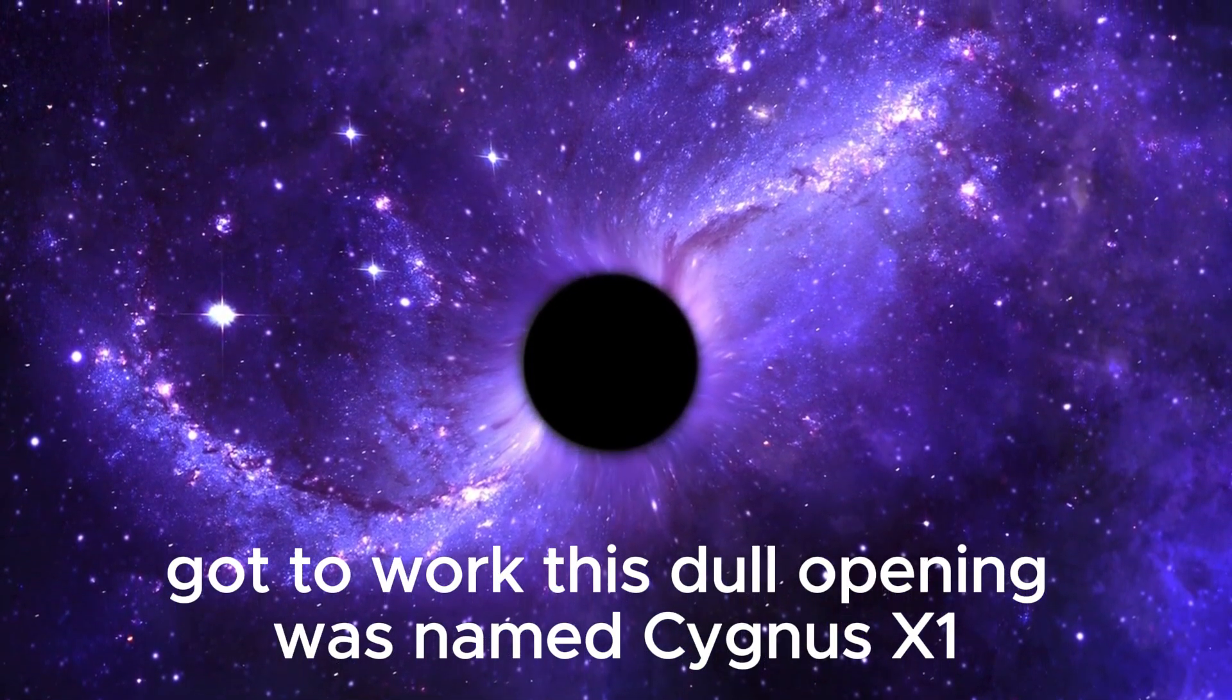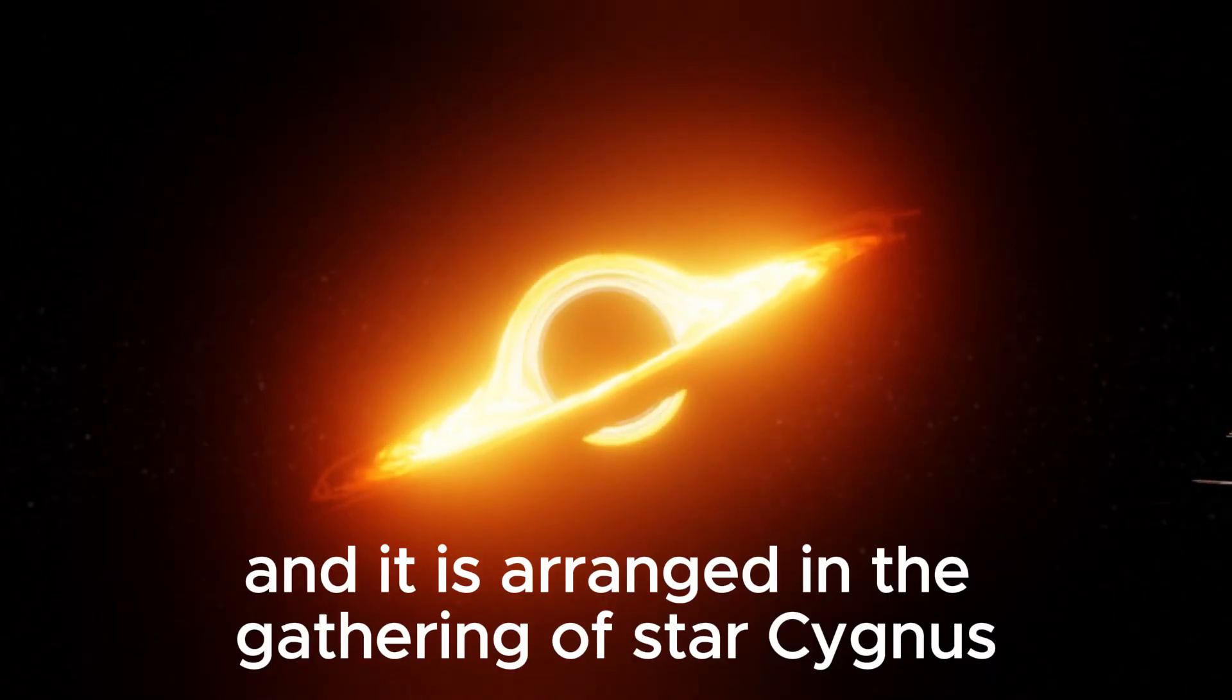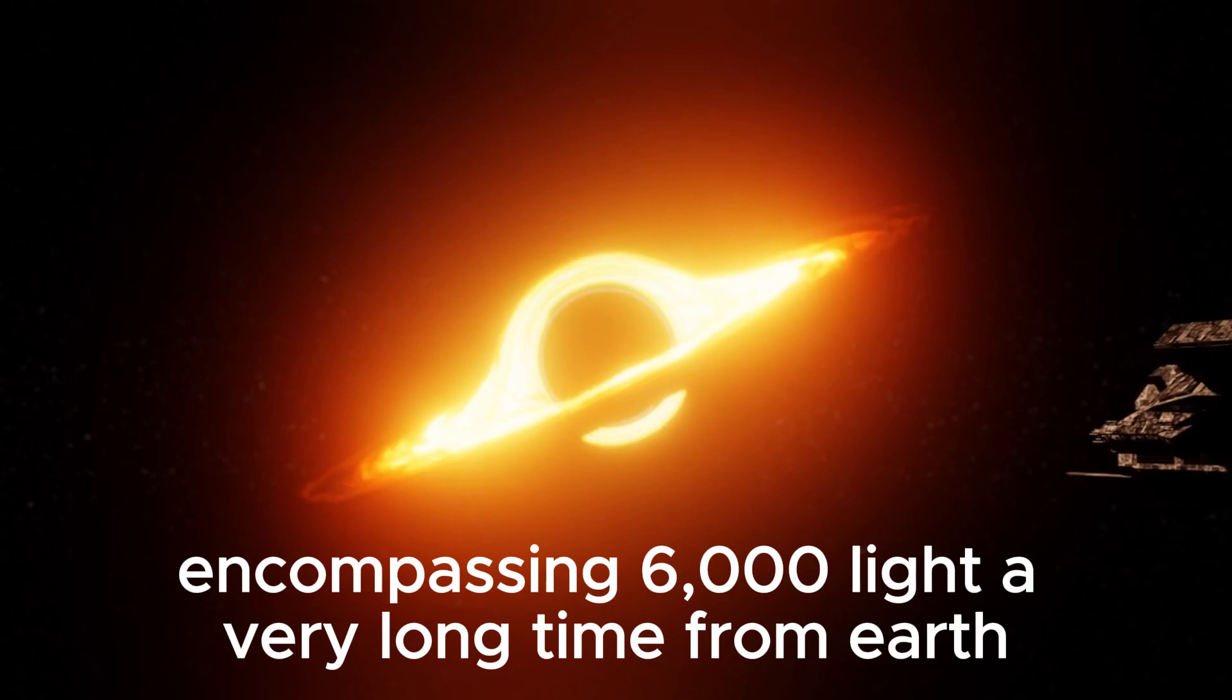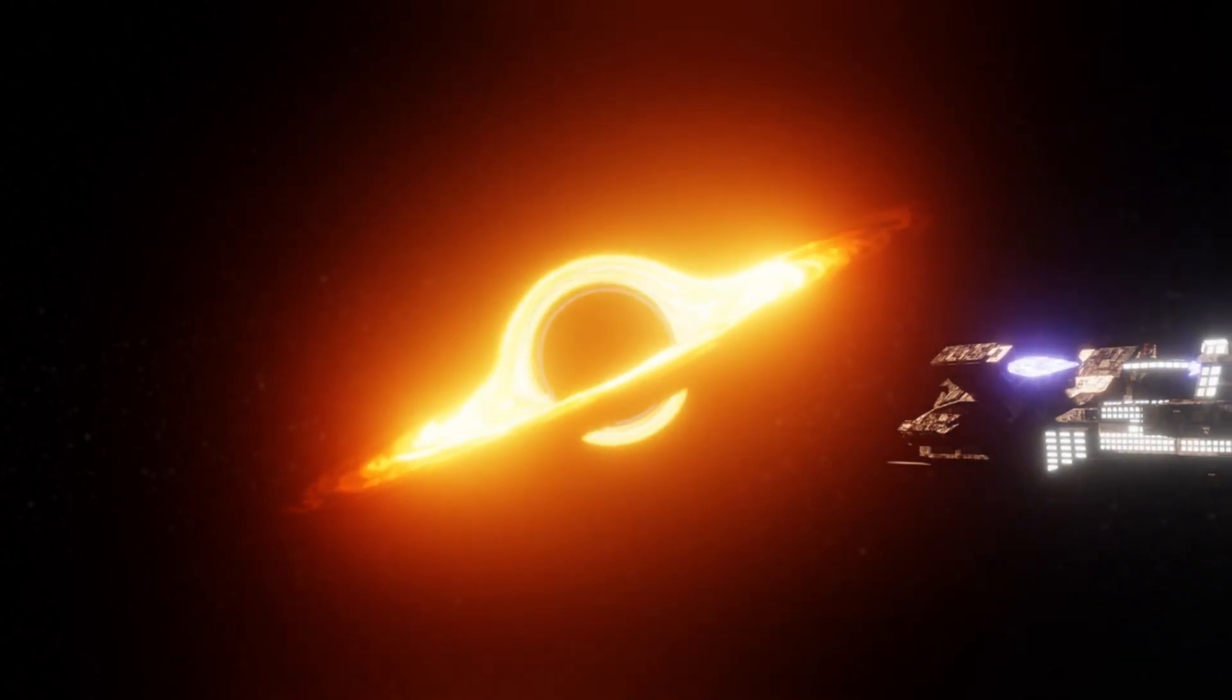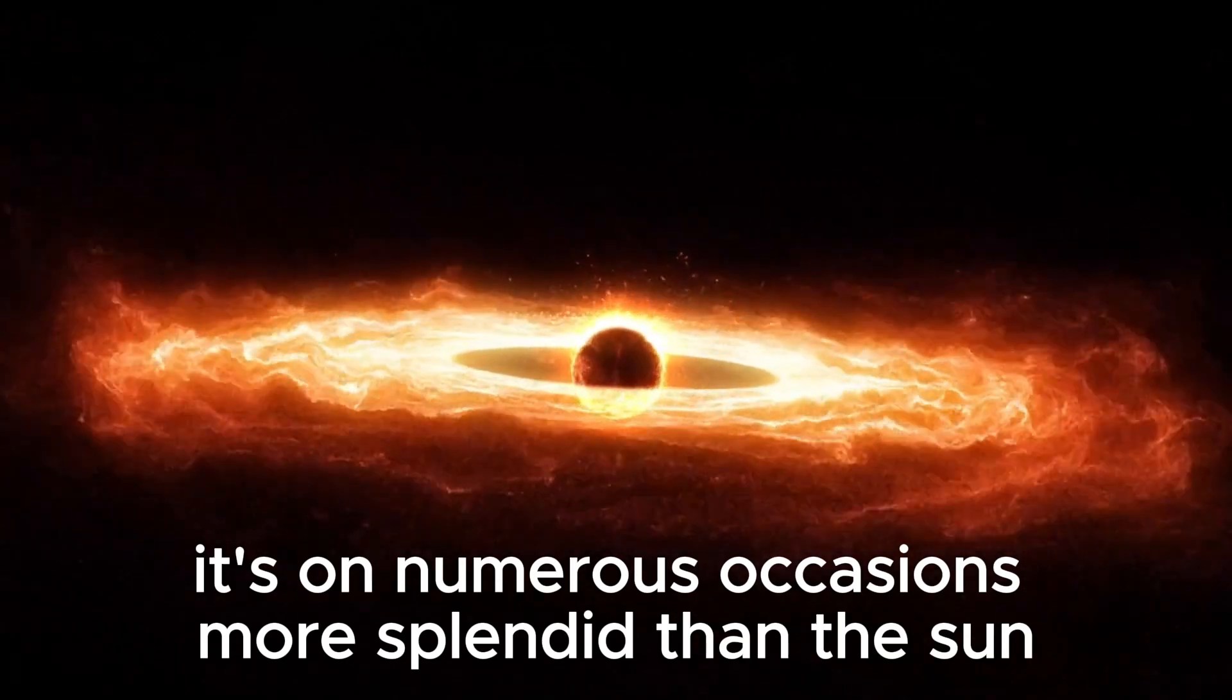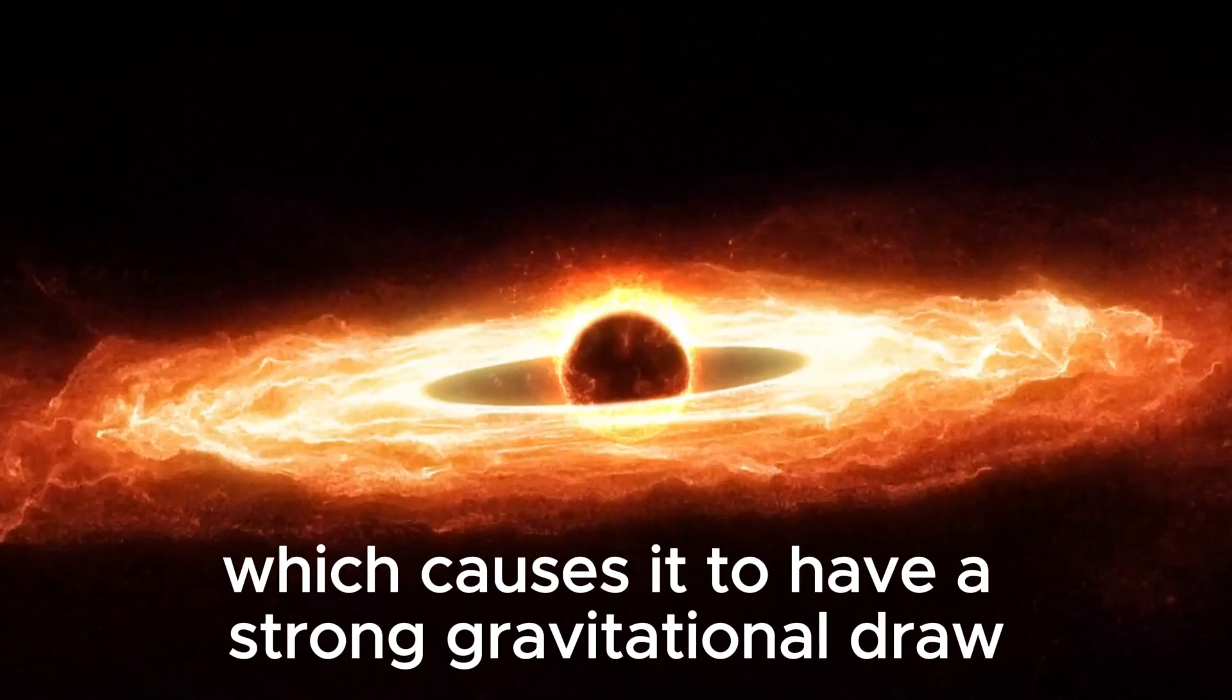This black hole was named Cygnus X-1, and it is located in the constellation Cygnus, approximately 6,000 light years from Earth. It was no small discovery. It's 20 times more massive than the sun and impossibly dense, which causes it to have a strong gravitational pull.